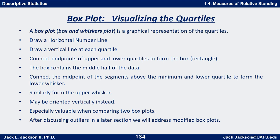Here's how you make one. You start by drawing a horizontal number line that starts at least at the minimum and ends at the maximum or higher, with a consistent scale in the same units as whatever you're measuring. Above each quartile you draw a small vertical line of the same size. You connect Q1 and Q3 to form a rectangle — that's the box, which contains the middle half of the data. Then connect the segments above the minimum and lower quartile to form the lower whisker, and similarly form the upper whisker.